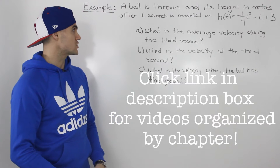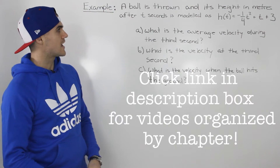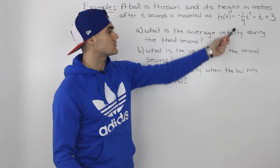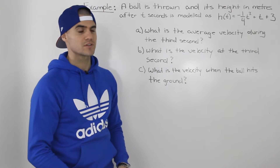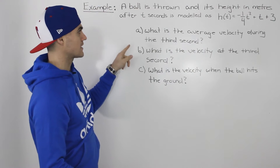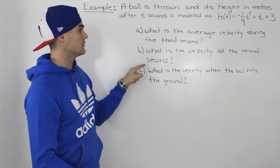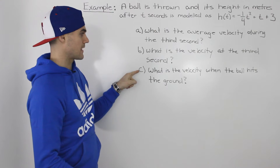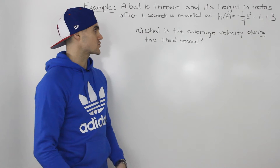Moving on to a rate of change example. A ball is thrown and its height in meters after t seconds is modeled by h of t equals negative one over four t squared plus t plus three. We have to answer a series of three questions: what is the average velocity during the third second, what is the velocity at the third second, and what is the velocity when the ball hits the ground?